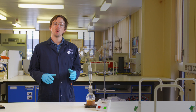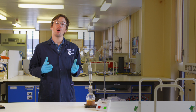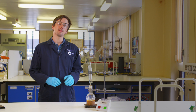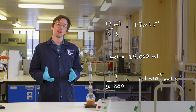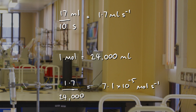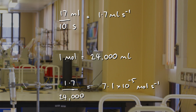Our number is quite a bit smaller than that — we haven't produced a whole mole of gas molecules yet. So we can take our number of millilitres and divide it by 24,000 to get the number of moles of gas we have produced. So now we've calculated our rate of reaction in moles per second.